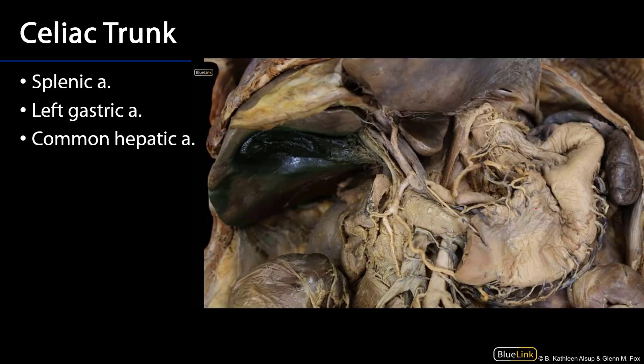Let's take a look at the celiac trunk. Most people are rather surprised when they first see the celiac trunk because typically there isn't much of a trunk to it at all, but rather three immediate branches that blossom from the T12 level of the abdominal aorta. Here we can see the crura of the diaphragm. Let's take a look at these branches.